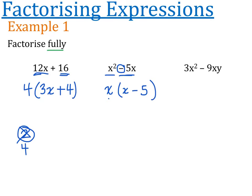This third question has two things happening in it. We've got 3x squared minus 9xy, so first I need to consider what do 3 and 9 have in common - they both have 3. And x squared and xy both have x in common. So I ask: what times by 3x gets me to 3x squared? I need to multiply by x. And what times by 3x gets me to minus 9xy? That's minus 3, because minus 3 times positive 3 gives minus 9, and x times y gives xy. There are three different examples of factorizing into one bracket.